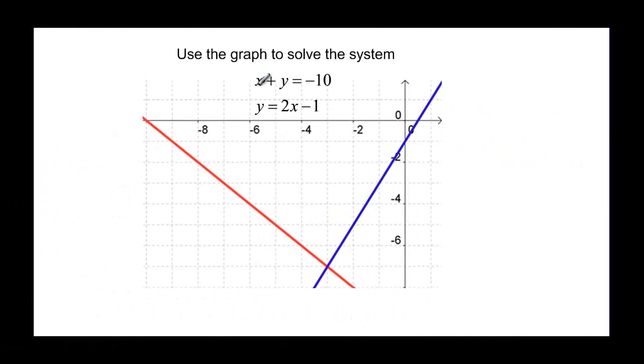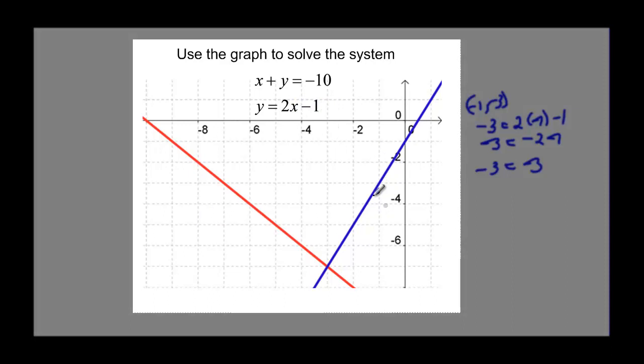Let's look at this example. x plus y is equal to negative 10 is going to be the red line, and y is equal to 2x minus 1 is the blue line. Everything on the red line is going to satisfy x plus y equal negative 10. Everything on the blue line is going to be y equal to 2x minus 1. We want to know where they share the same answer and the same ordered pair, and that will be at our intersection.